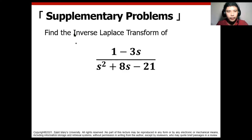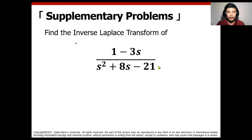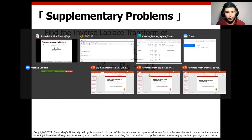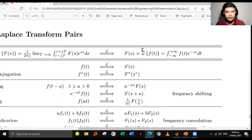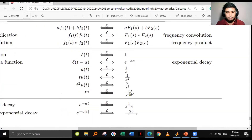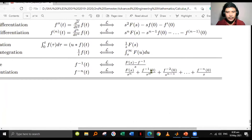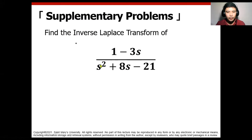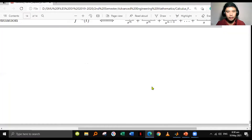Now for an example of inverse Laplace transform, we have 1 over 1 minus 3s over s squared plus 8s minus 21. You will notice that the denominator side of this transform is actually quite complex, since we cannot easily find a denominator which resembles our tables of transform pairs.